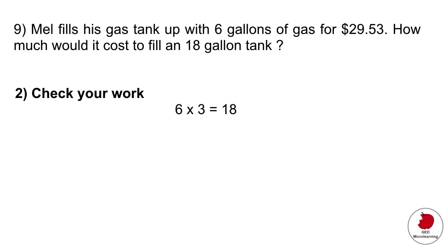Another way to do it: since 18 divided by 6 is 3, and we know the price for 6 gallons is $29.53, just multiply $29.53 by 3 to get 18 gallons' worth. You get the exact same answer — a good way to check your work.